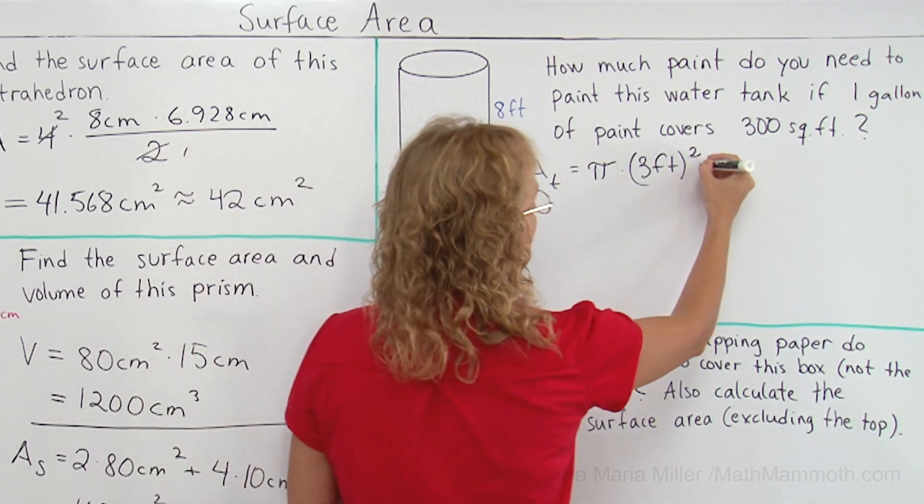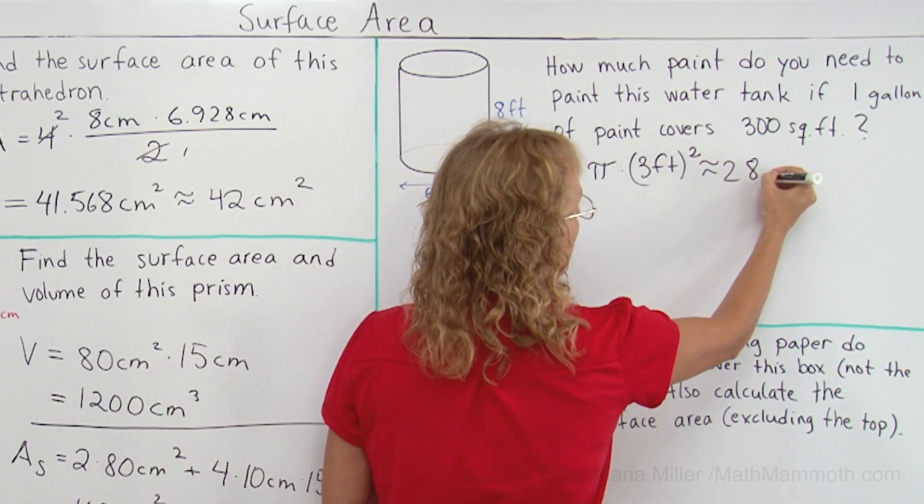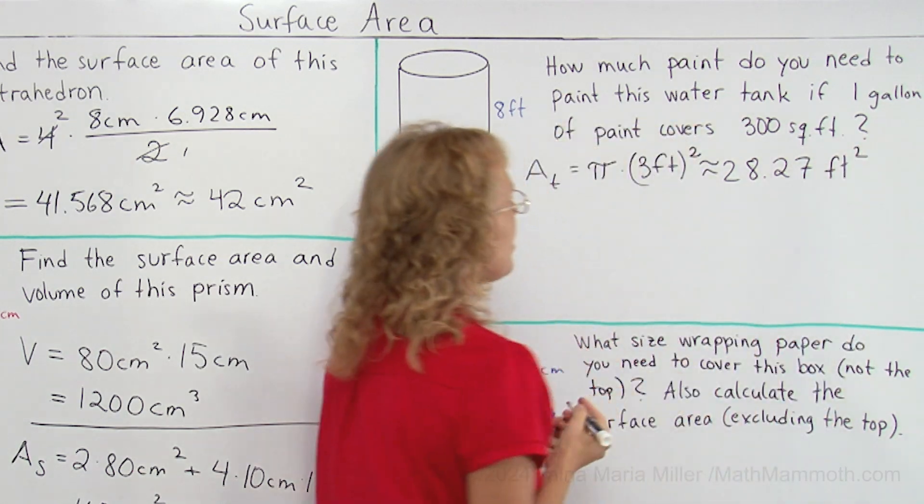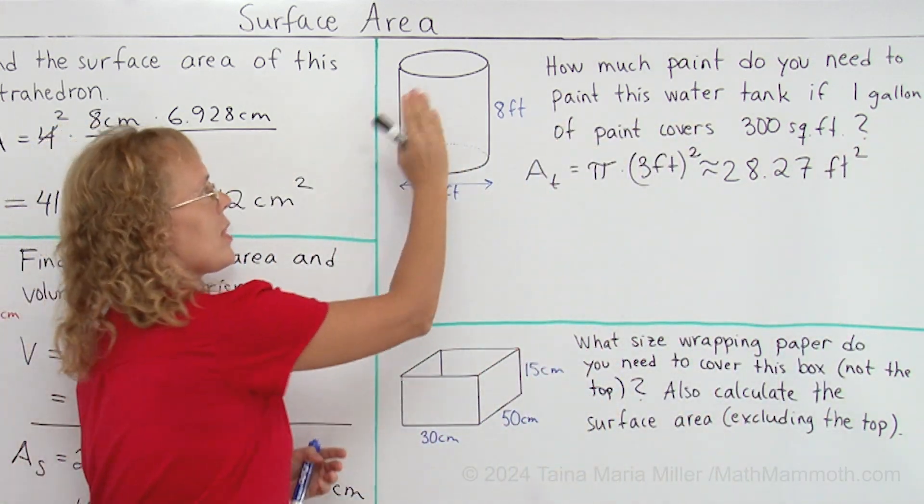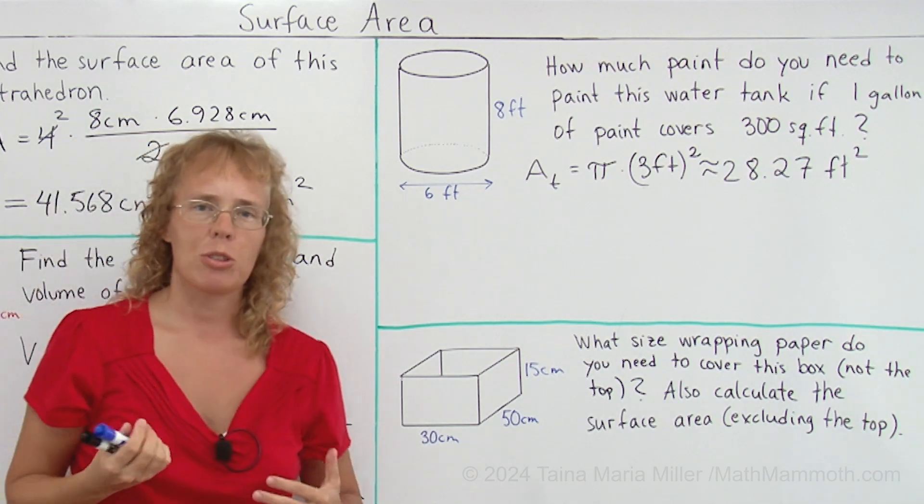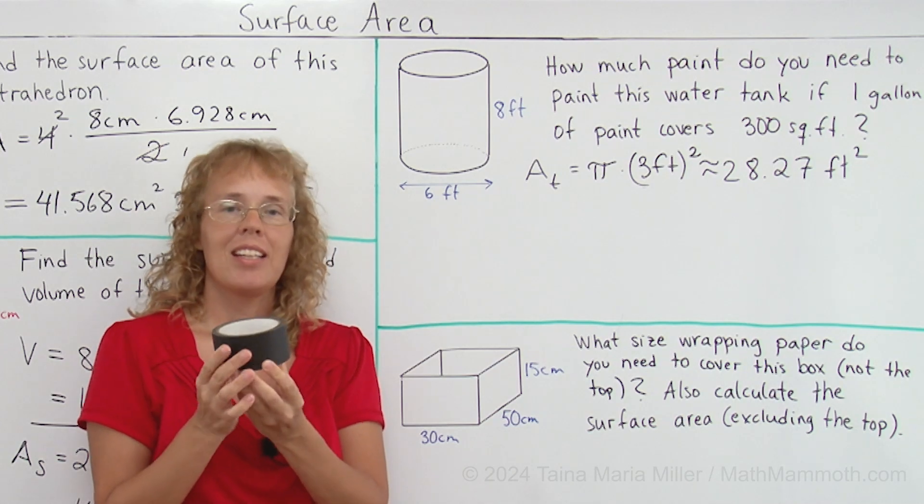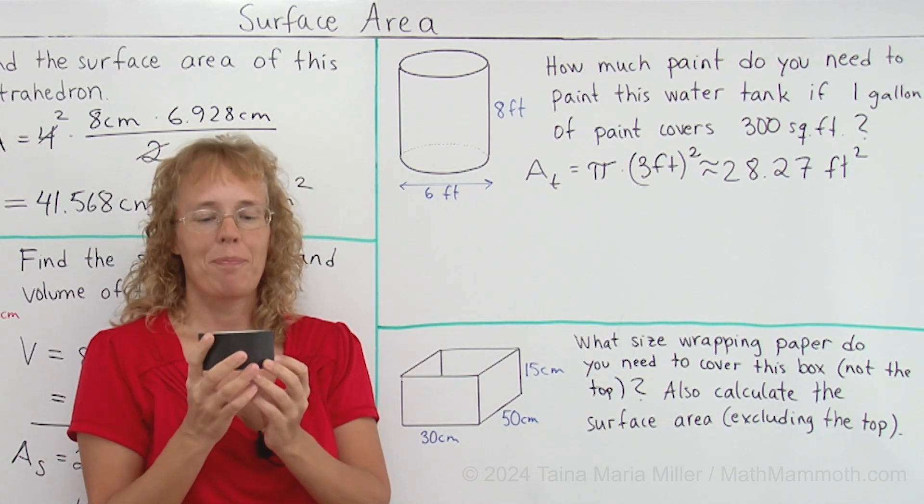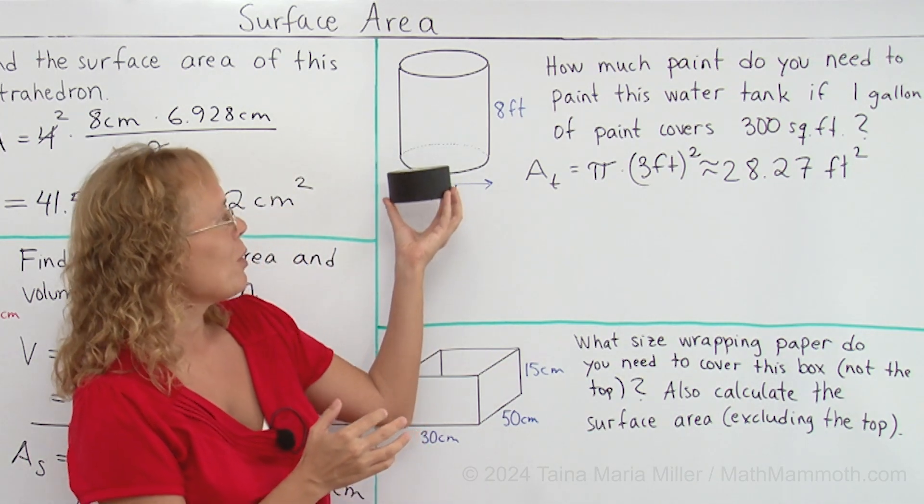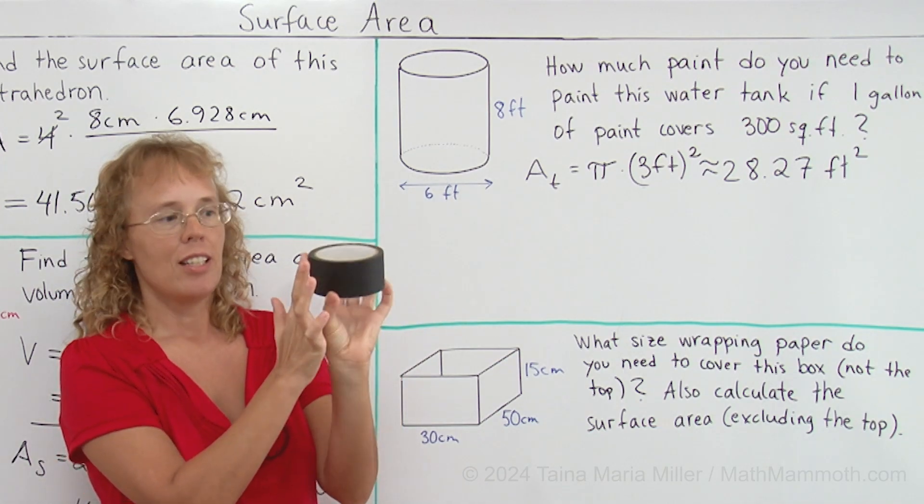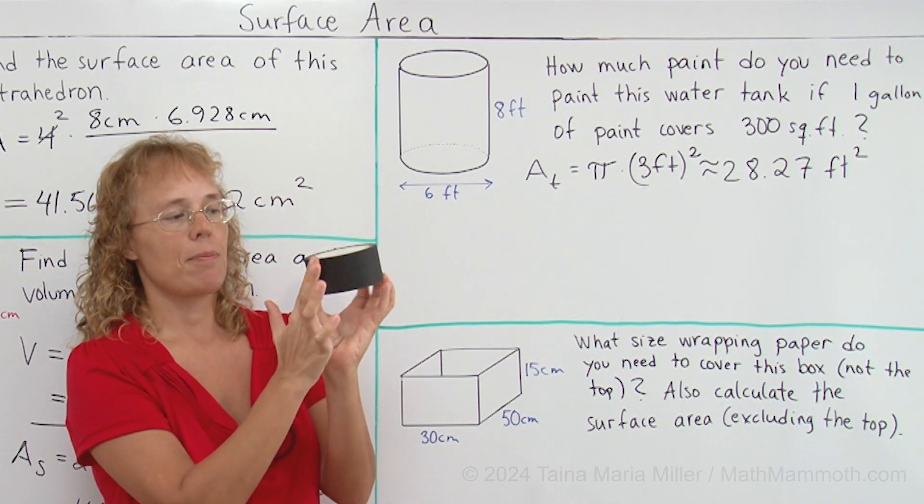Now the side that wraps around it let me illustrate it. Here I have a cylinder it's a roll of tape, imagine it is our water tank and we are wanting to know the surface area of this wrapped around face.